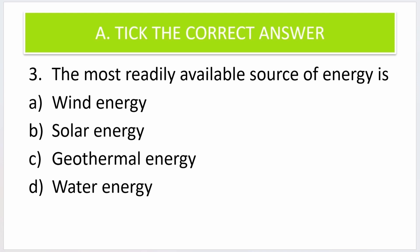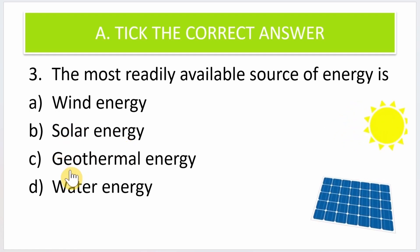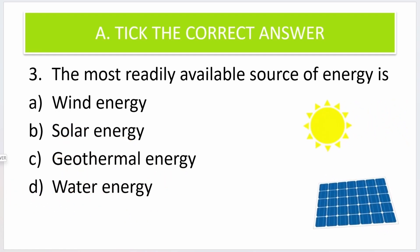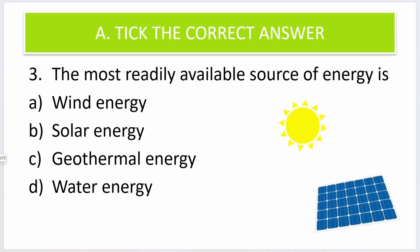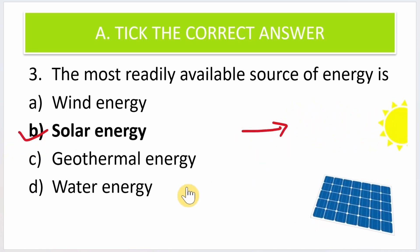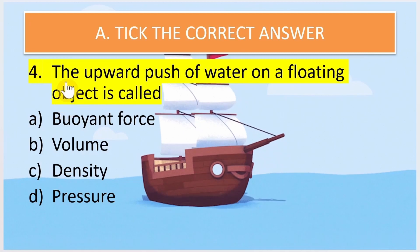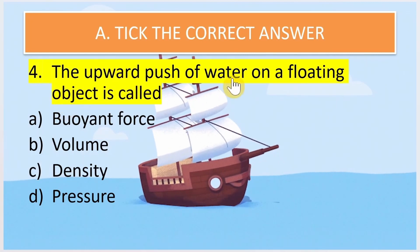Third question: the most readily available source of energy — the options are wind energy, solar energy, geothermal energy, and water energy. The correct answer is solar energy, as you can see from this particular figure — it is the most readily available source of energy.